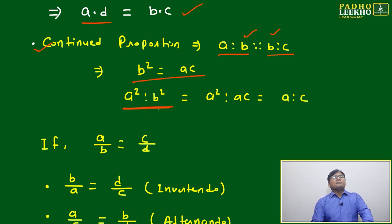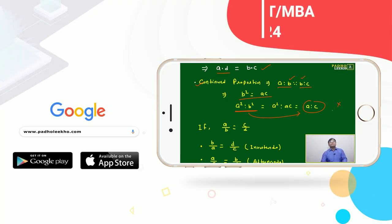Another derivation: if b² equals ac, then a²/b² we can write as a²/ac, or we can say a/c. This is sometimes useful for continued proportion. The duplicate of the ratio between a and b will equal the ratio a/c.